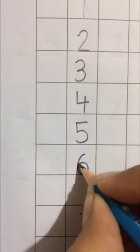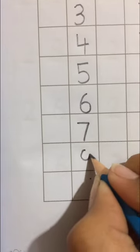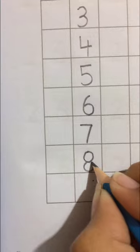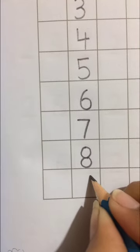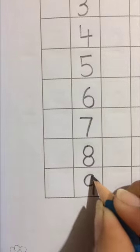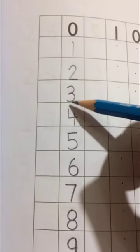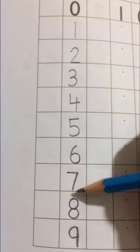5 ke baad kya aata hai? 6. To aapne 6 likha. 6 ke baad 7. Then, 8. 8 ke baad kya aata hai? 9. Aapne saath count kar karke likhna bhi hai, theek hai? 9 ke baad kya aata hai? 0, 1, 2, 3, 4, 5, 6, 7, 8, 9. 9 tak ho gaya.